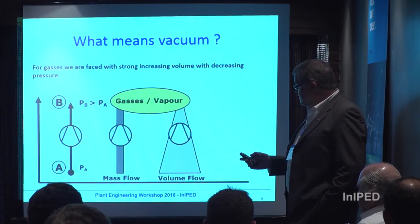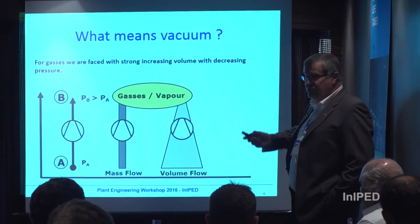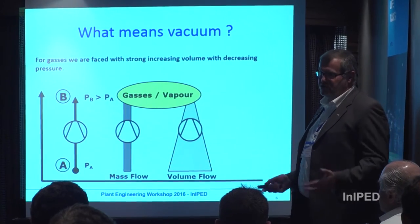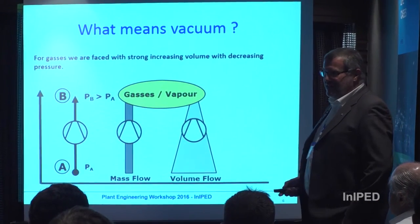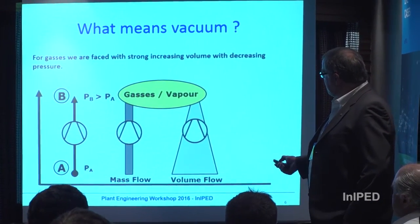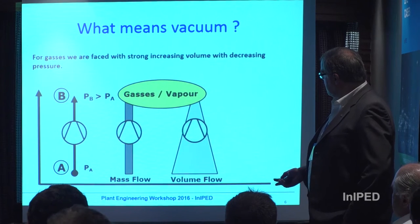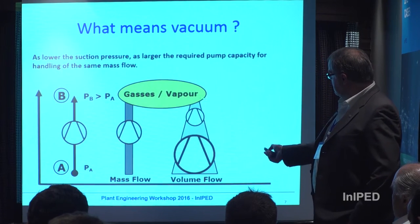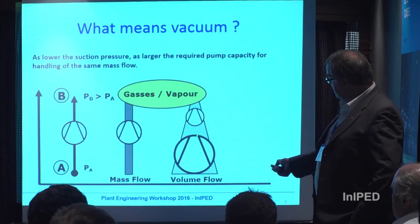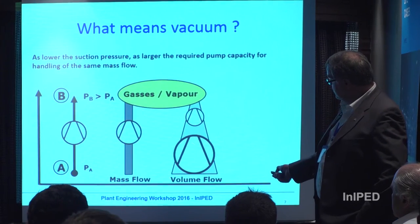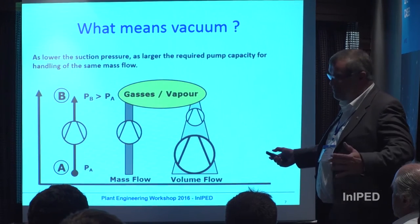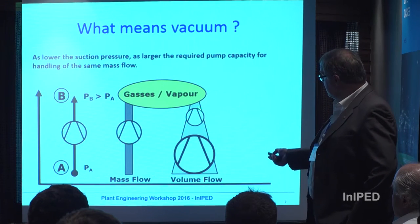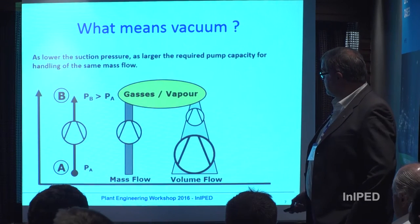That means when you go down in vacuum — down in pressure — you need a big pump to handle the big volume. So as this shows, when you go down in pressure, you need a bigger pump in terms of volume than at higher pressure ratings.